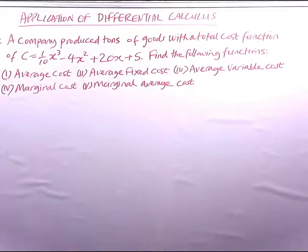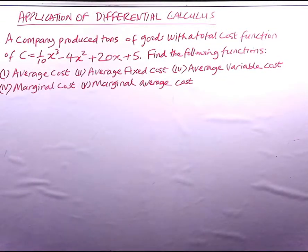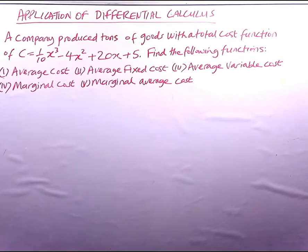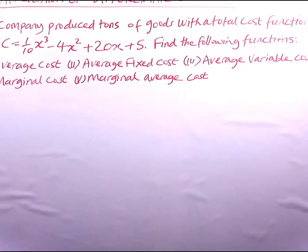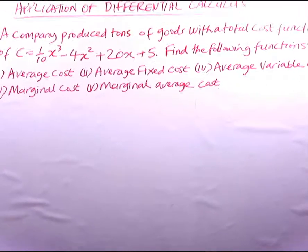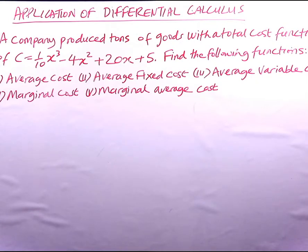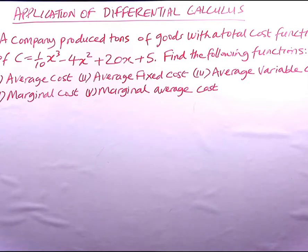Here we have applications of differential calculus. For example one: a company produced X tons of goods with a total cost function C = (1/10)X³ - 4X² + 20X + 5. We have to find the following functions: the average cost, the average fixed cost, the average variable cost, the marginal cost, as well as the marginal average cost.